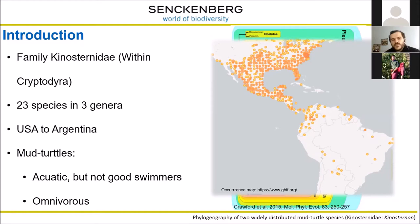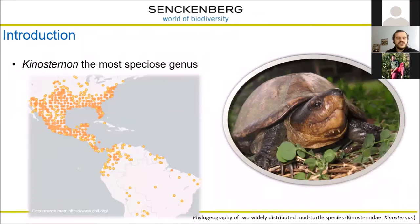They mainly walk on the bottom of these water bodies. They are omnivorous, not that big — kind of small, about 20 centimeters of carapace. The genus Kinosternon is the most species-rich genus, not only within the Kinosternidae family, but among all turtle genera. It has almost the same distribution as the family, from the United States to Argentina.